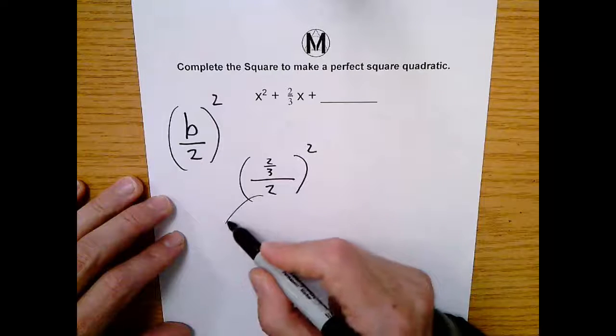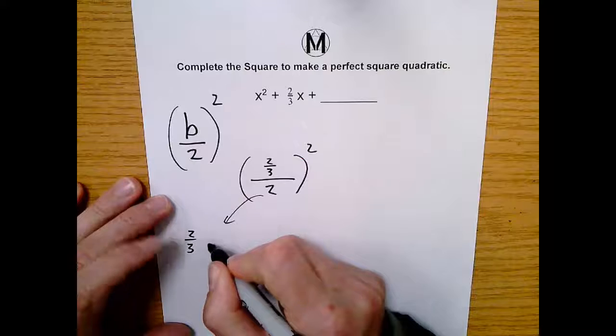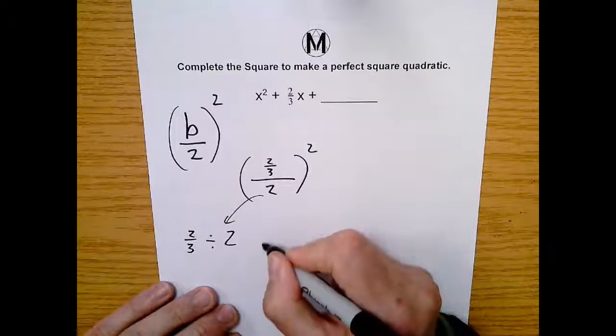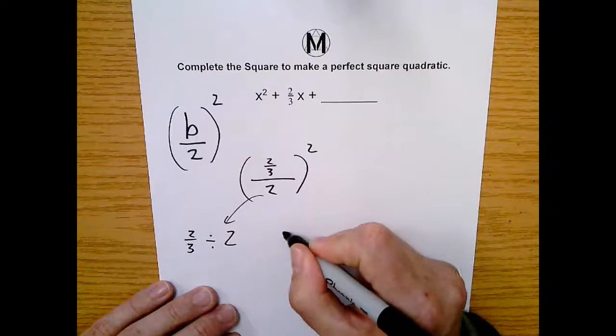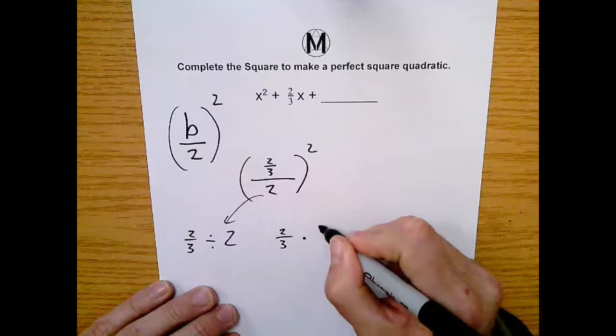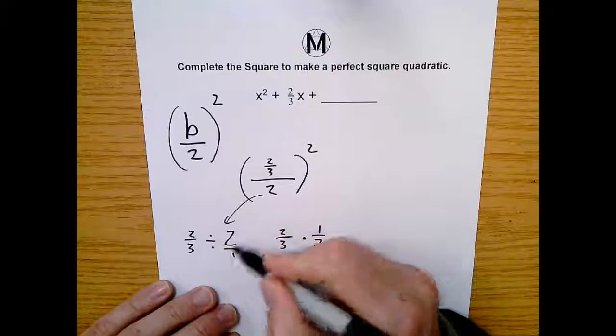So let's draw like a little sidebar here. 2 over 3 divided by 2. Well, that's actually the exact same thing as saying 2 divided by 3 multiplied by the reciprocal. The reciprocal is 1 half, right? Because this is like 2 over 1 and you flip it, it's 1 over half.